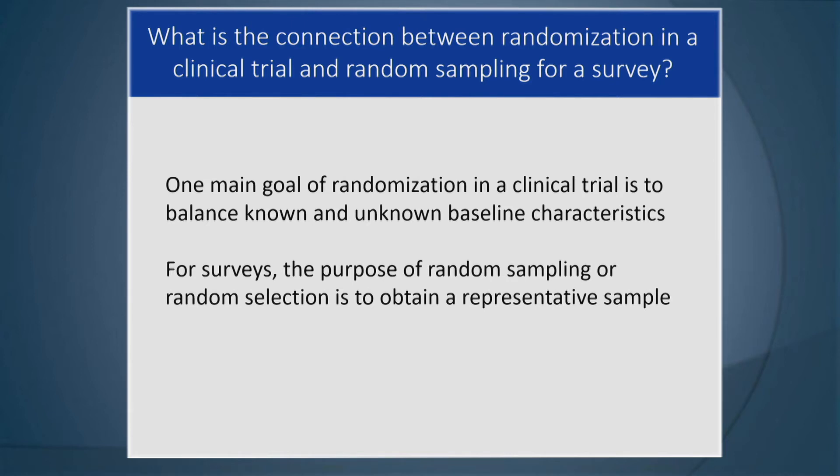Here's the question: is the group of participants being randomized representative of the population with the disease you're studying? Remember the sequence of filters — you start with all those who have the disease, and then you filter by willingness to participate, eligibility, inclusion-exclusion criteria, consent, and then they get randomized. Are those who get randomized representative of that very first block? Chances are, they are not.